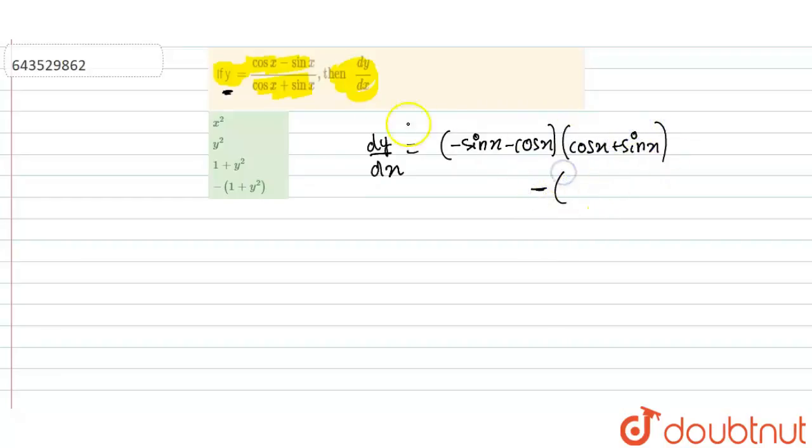now we need to differentiate the denominator, which is minus of sin x plus cos x into keeping numerator as constant, cos x minus sin x and this divided by denominator square, which is cos x plus sin x whole square.